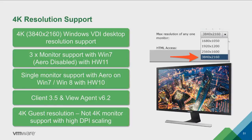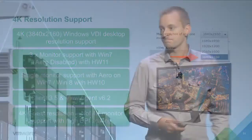4K resolution support — this is not a 4K monitor with high DPI scaling. It's single monitor support for 4K resolution of the virtual desktop itself, on Windows 7 and Windows 8. Requires hardware version 10, Horizon client 3.5, and Horizon agent 6.2 — essentially the latest of everything. The screenshot shows the 4K resolution in the display settings.